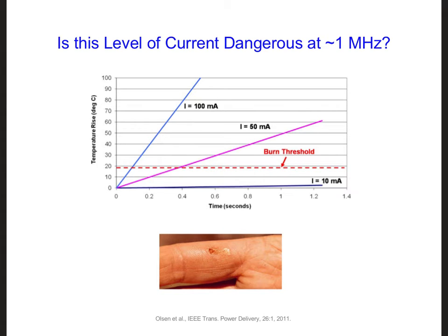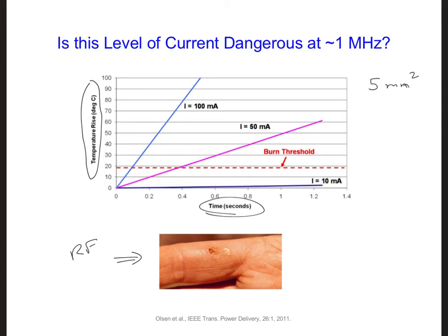In this plot, you can see time along the x-axis, and the y-axis shows how much the temperature will rise in a person's finger or hand, assuming an initial contact area of 5 mm squared. This size of contact area can be typical. On the bottom of this slide is an example RF burn of about this size.